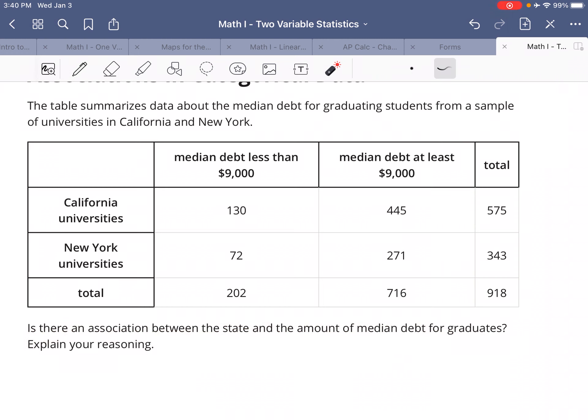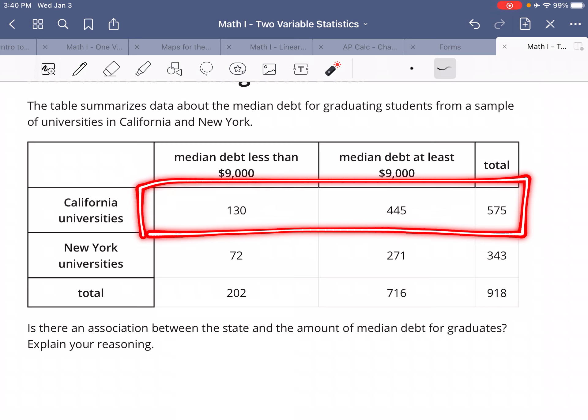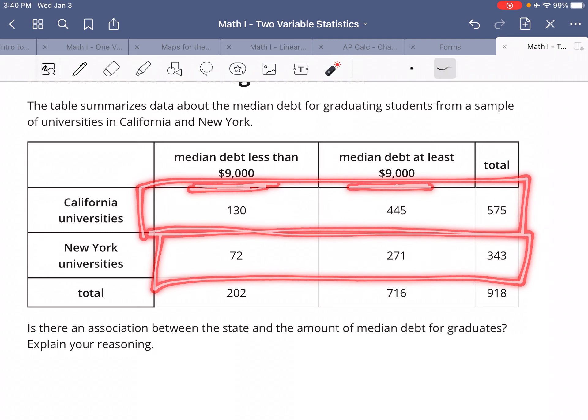So what we're going to want to do is compare New York universities to California universities. The way we're going to do it is we're going to figure out what percent of students who went to California universities had median debt less than $9,000 or at least $9,000. And then we're going to do the same thing for New York universities.